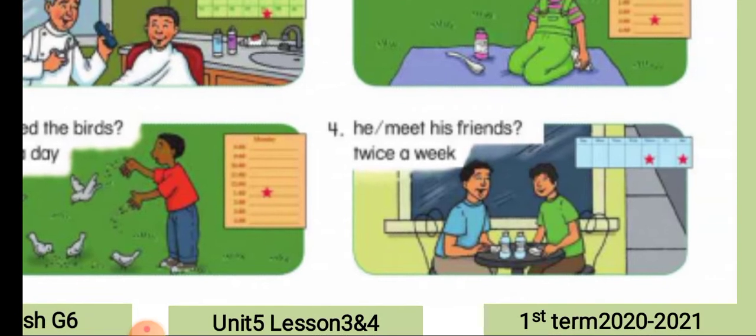Number four: 'He meets his friends twice a week.' Question: 'How often does he meet his friends?' Answer: 'He meets his friends twice a week.'